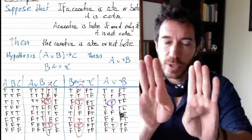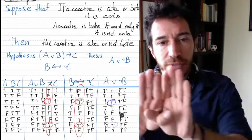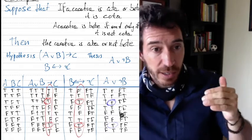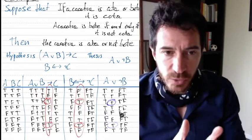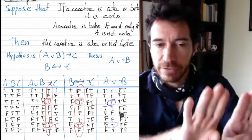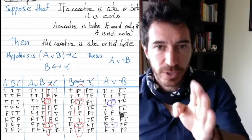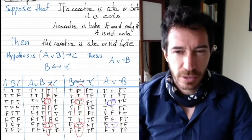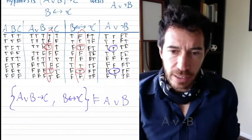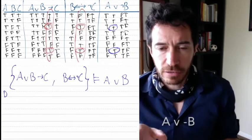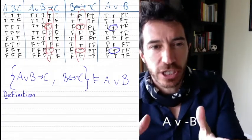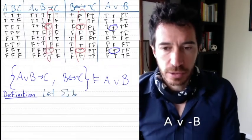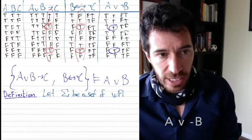We get that the conclusion is true in those two cases. So whenever the first two formulas are true, the last one is also true. It doesn't matter what ata, cota, and bote are — in all the possibilities of them being true or false about this cacatua, if the first two sentences are true, then the last one is true. So our reasoning here was actually correct. We write this as: (A or B → C) and (B ↔ ¬C) tautologically implies A or ¬B.